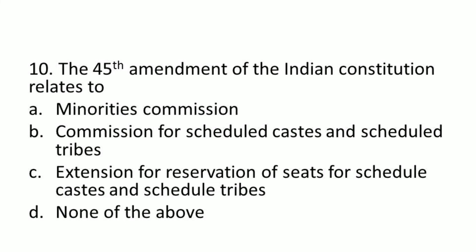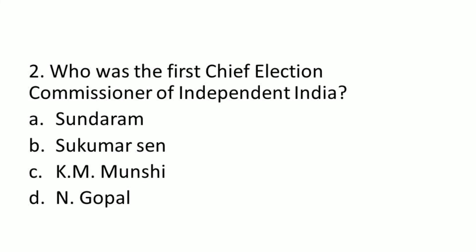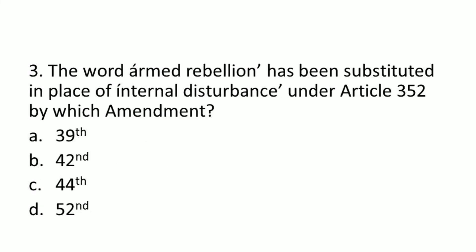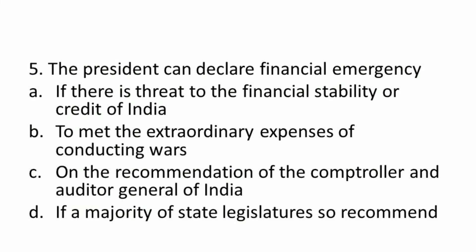Let's see the answers — match your answers. First question: Article 301 of the constitution says 'Subject to the other provisions of this part, trade, commerce and intercourse throughout the territory of India shall be free.' So first answer is A option. Second question: B option, that is Sukumar Sen. He was the first Chief Election Commissioner of independent India. Third question: The answer is C option, that is the 44th Amendment, by which 'internal disturbance' was substituted with 'armed rebellion' under Article 352.